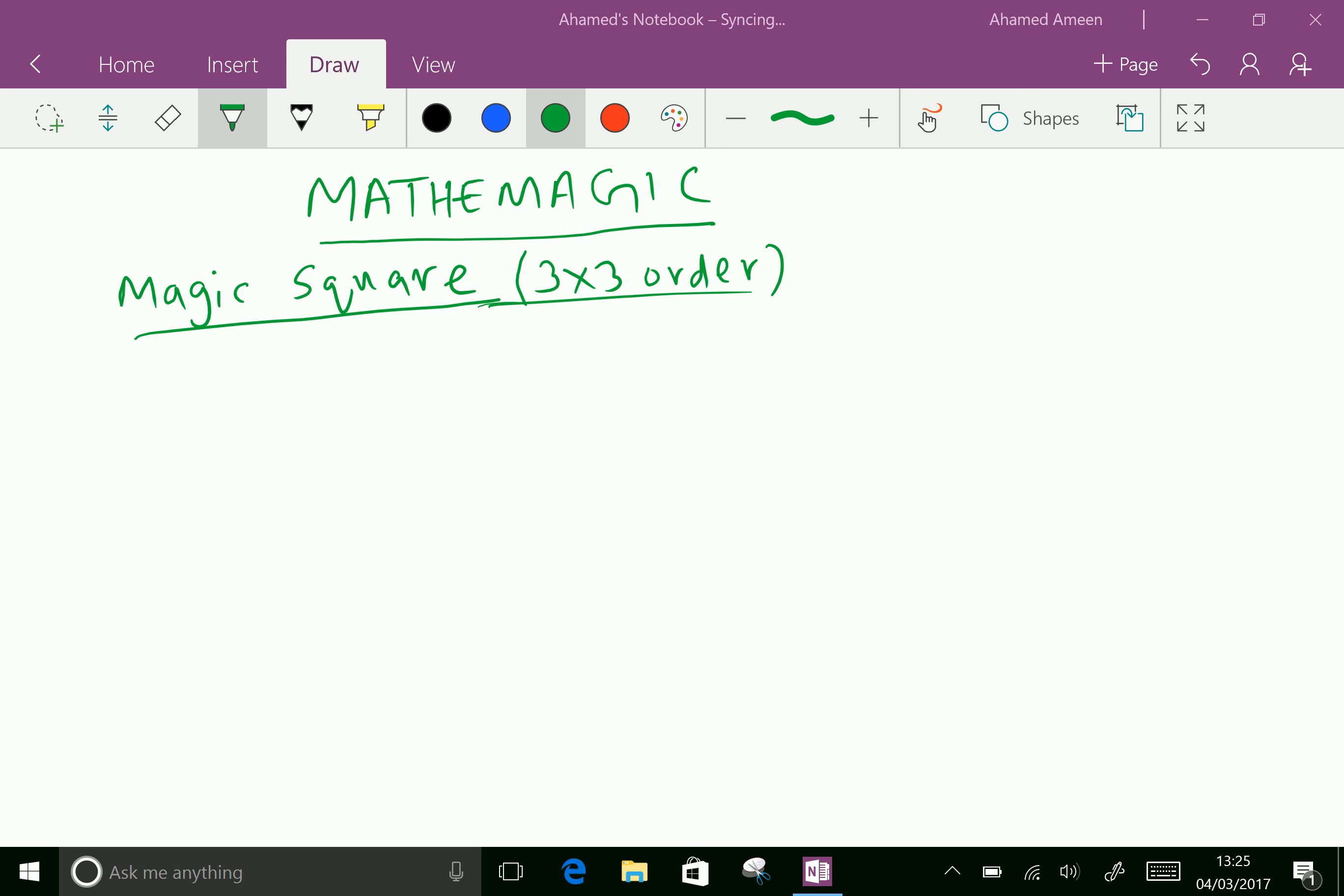Now let us see how to create a magic square of 3 into 3 order. Suppose what is the magic square?